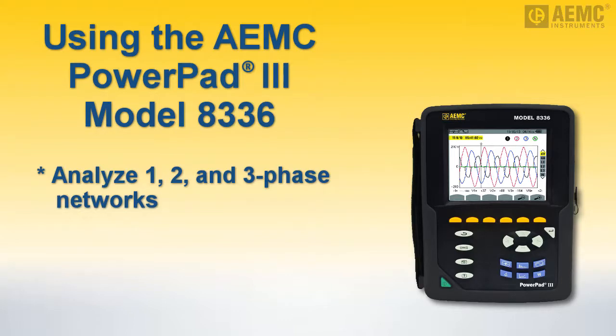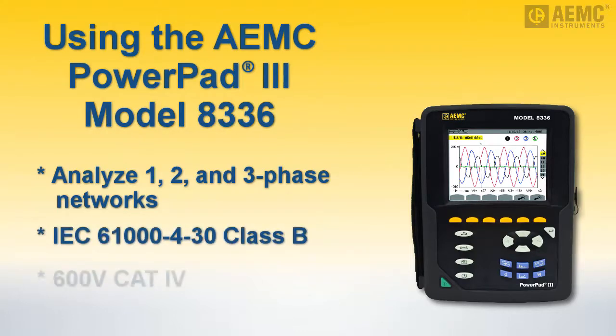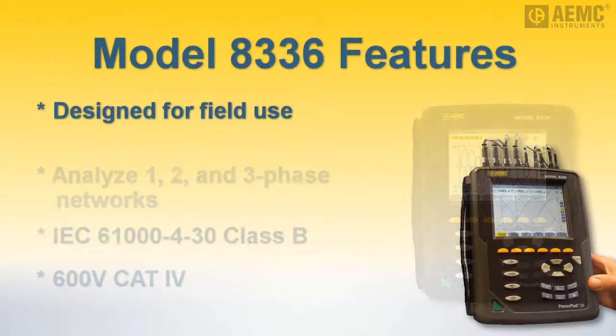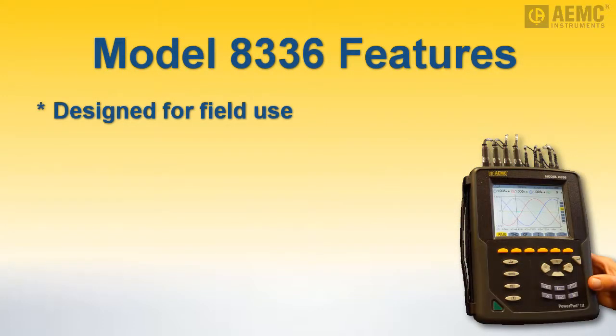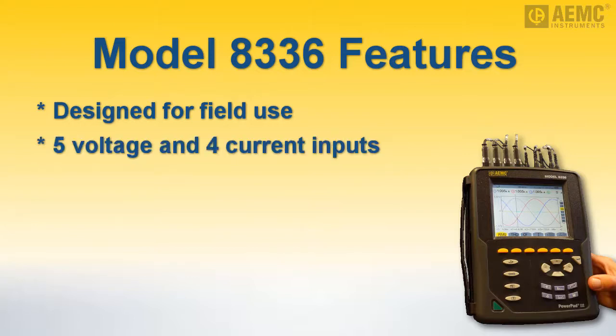The instrument is IEC 61000-4-30 Class B compliant and safety rated to 600 volts Category 4. The Model 8336 is designed for use in the field with direct access to configuration and measurement data. It includes five voltage input connections facilitating four voltage measurement channels and four current input connections for four current measurement channels.